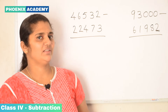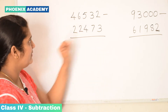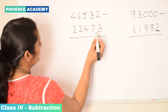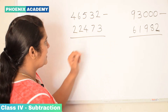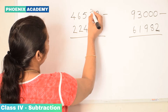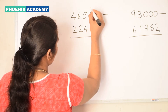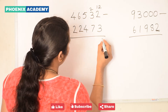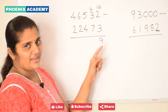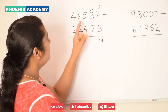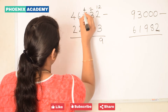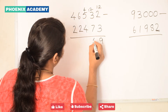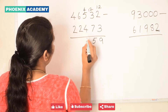Let's do subtraction with regrouping. 46,532 minus 22,473. 2 minus 3 — since 3 is a bigger number, we need to borrow value from the tens place. So this 3 becomes 2, and 2 becomes 12. 12 minus 3 is 9. 2 minus 7 — again 7 is a bigger number, so we need to borrow from the hundreds place. This 5 becomes 4, and 2 becomes 12. Then 12 minus 7 is 5. 4 minus 4 is 0.